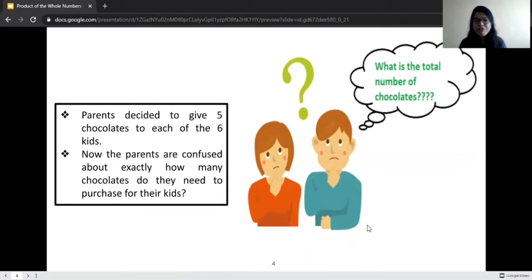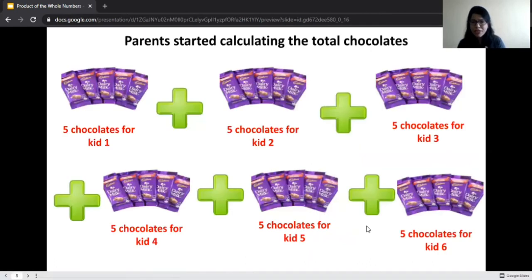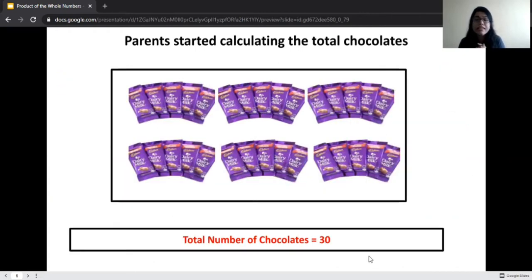But now there is a question. Parents decided to give five chocolates to each of the six kids. Now they are confused. How many chocolates should they purchase? The parents started calculating. They were like five chocolates for one kid, five chocolates for second kid, five chocolates for third kid, five chocolates for fourth kid, five chocolates for fifth kid, five chocolates for sixth kid. And finally they calculated they need to purchase 30 chocolates.